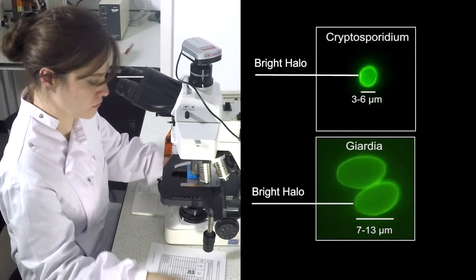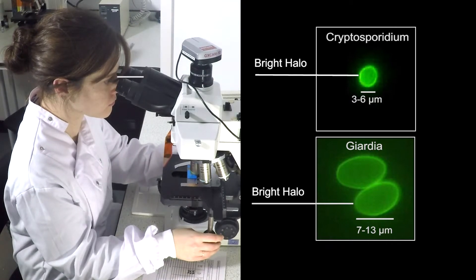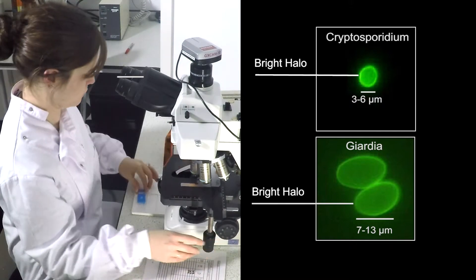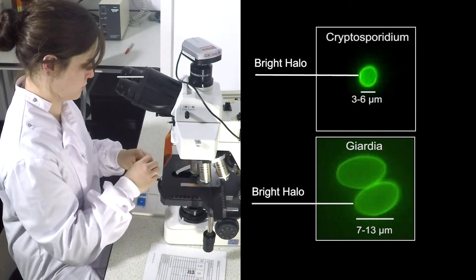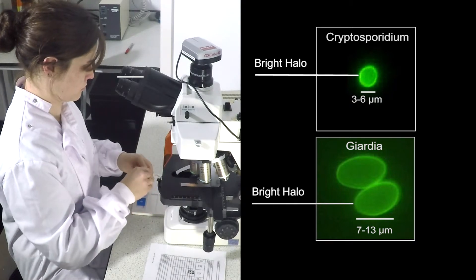Cryptosporidium oocysts and Giardia cysts should be initially identified using FITC. Analysis for characteristic FITC staining should be performed at at least 200 times magnification.